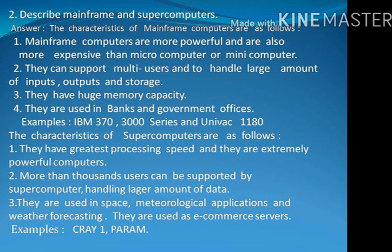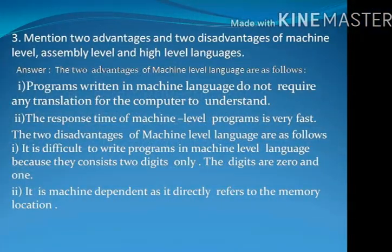The characteristics of supercomputers are as follows. Number 1: They have the greatest processing speed and are extremely powerful computers. Number 2: More than thousands of users can be supported by supercomputers handling large amounts of data. Number 3: They are used in space, meteorological applications and weather forecasting. They are also used as e-commerce servers. Examples: Cray and Param are examples of supercomputers.